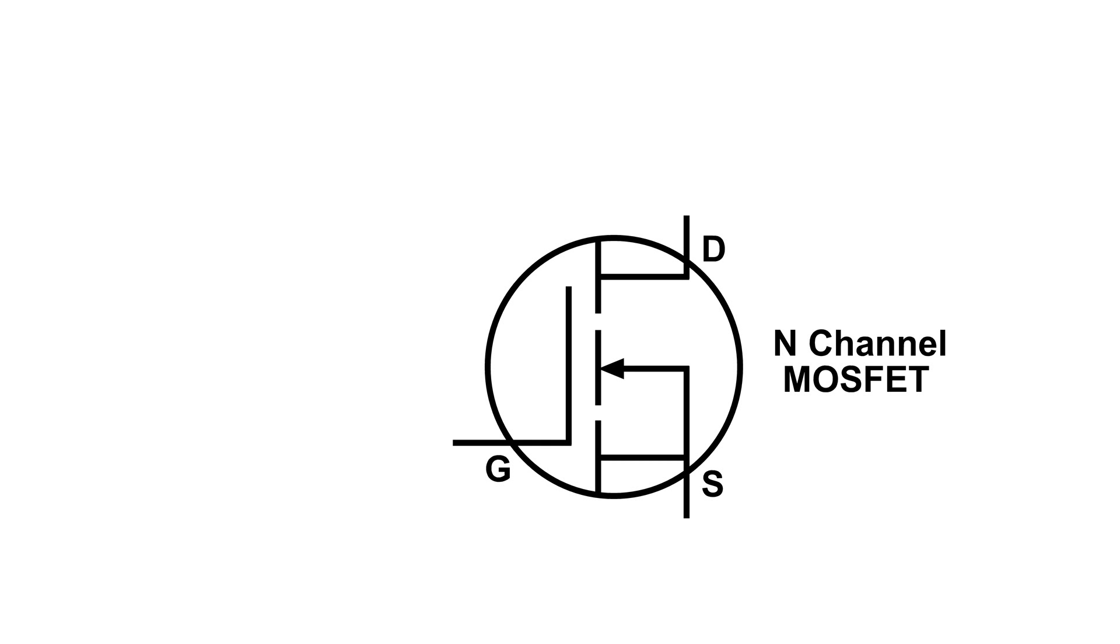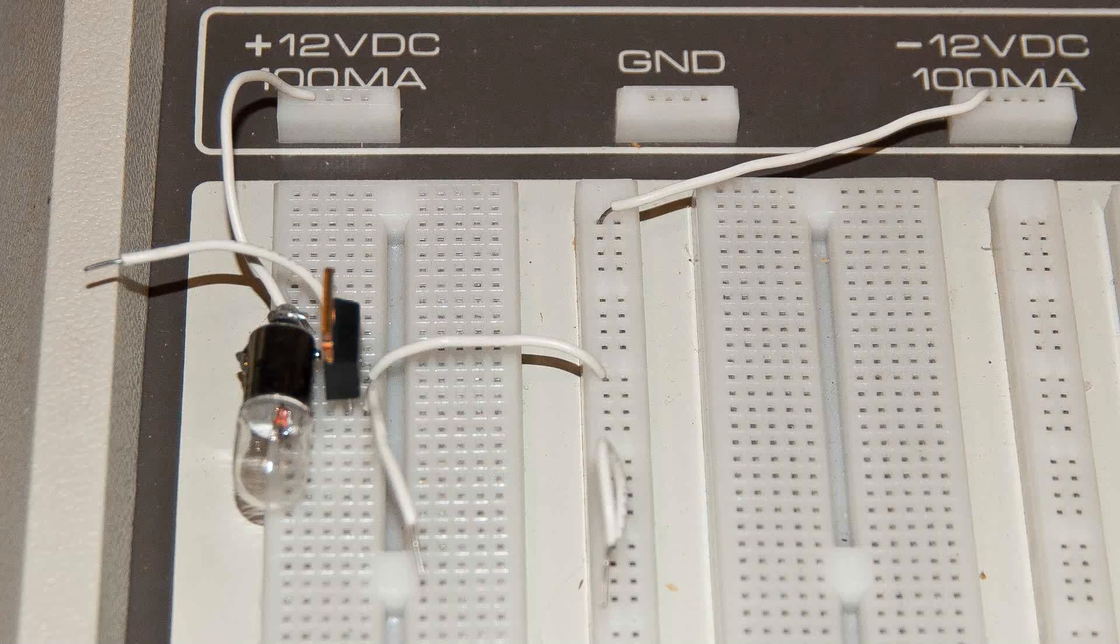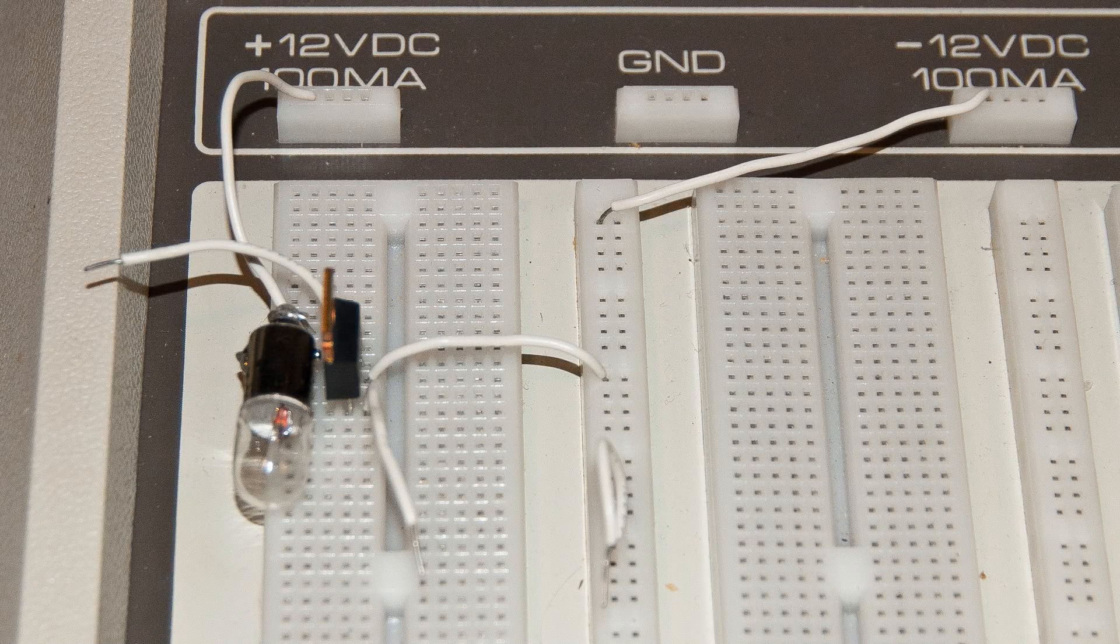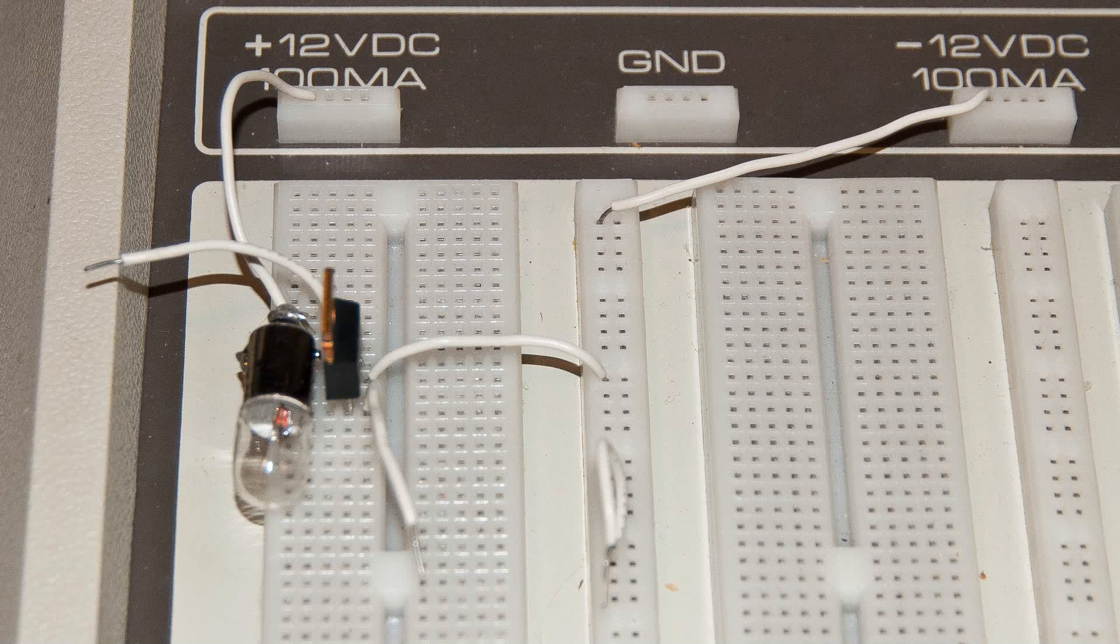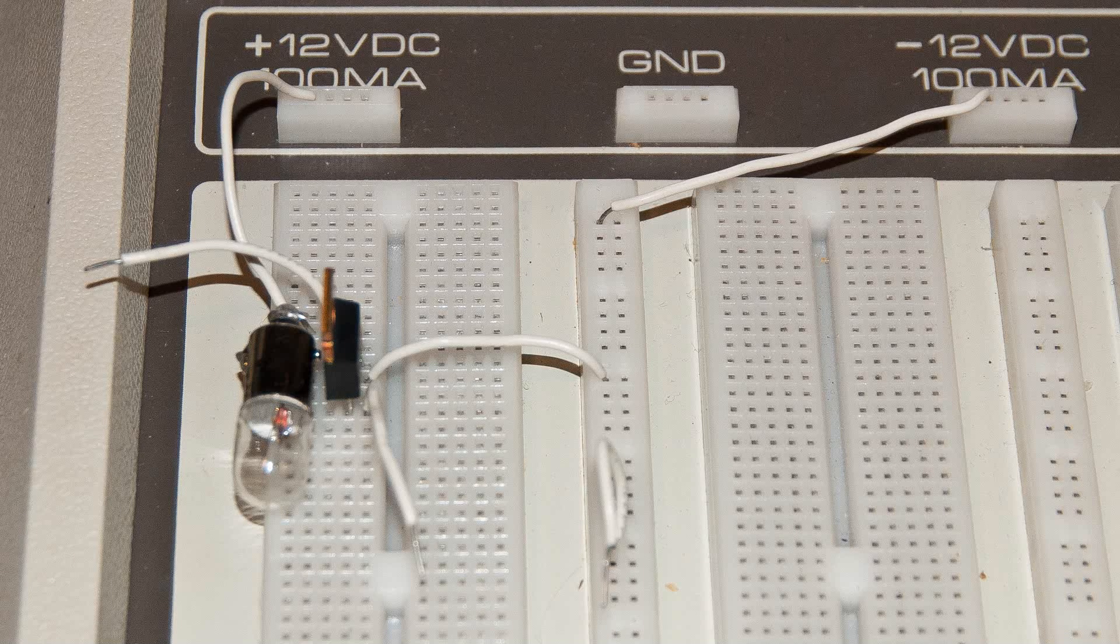This is a diagram of a MOSFET transistor. And here I've got it on my trainer. On the left you can see a light bulb, an incandescent light bulb, and then the MOSFET.